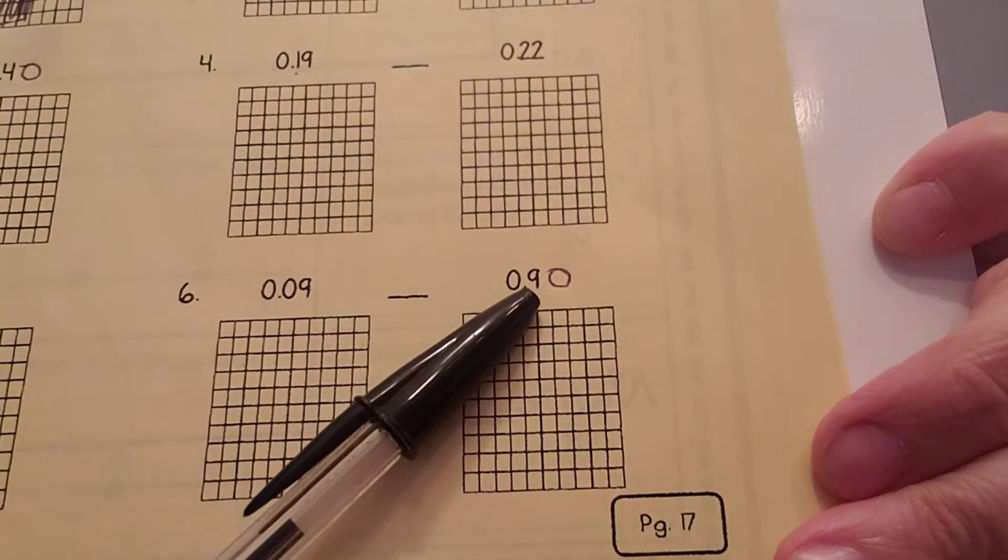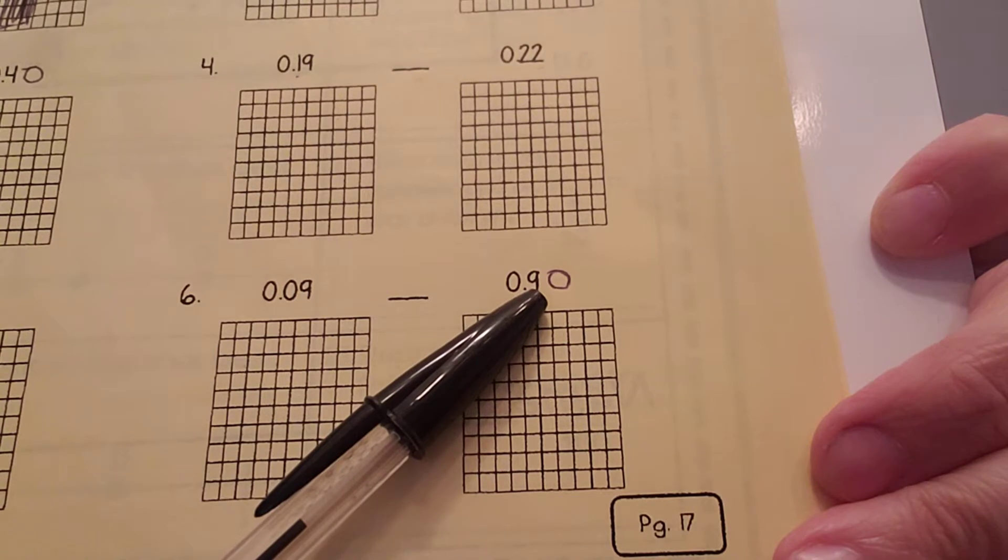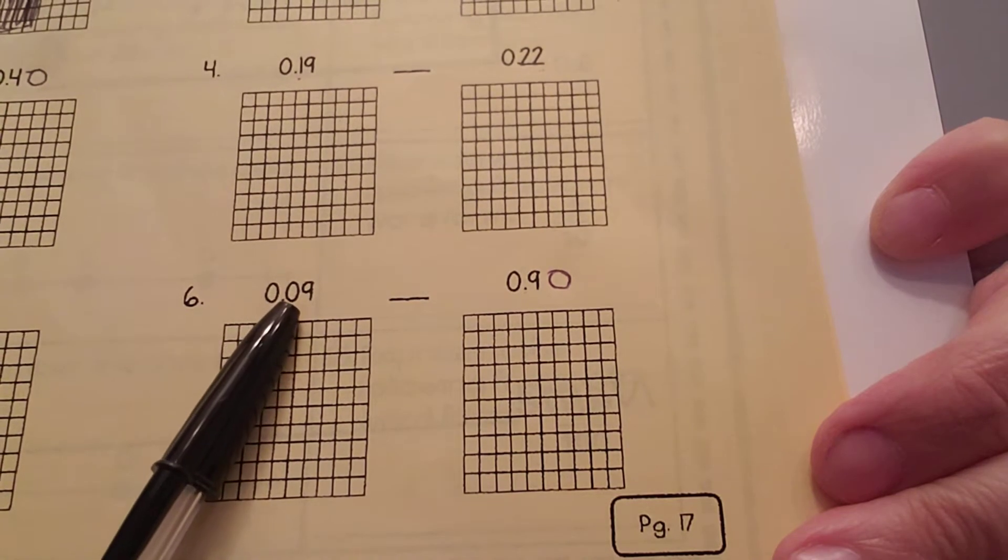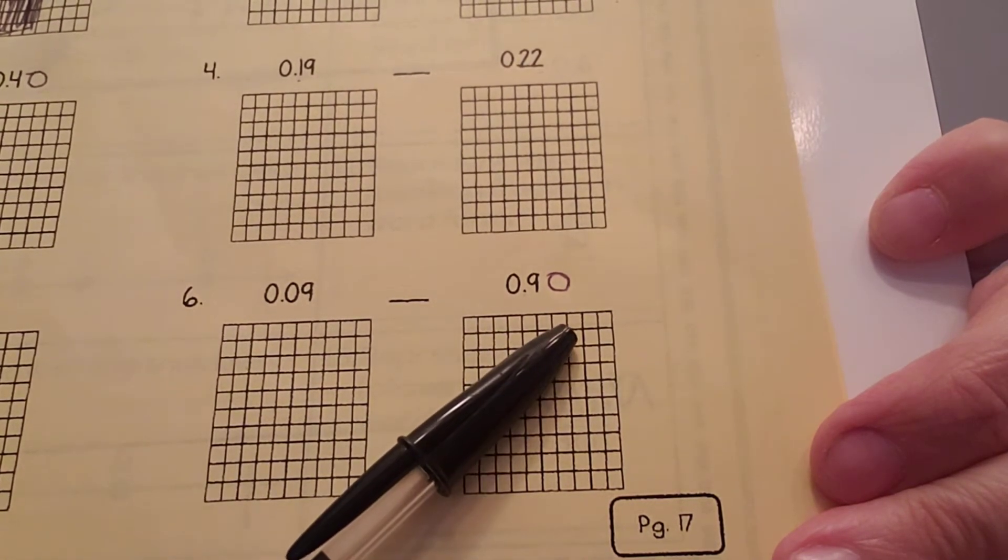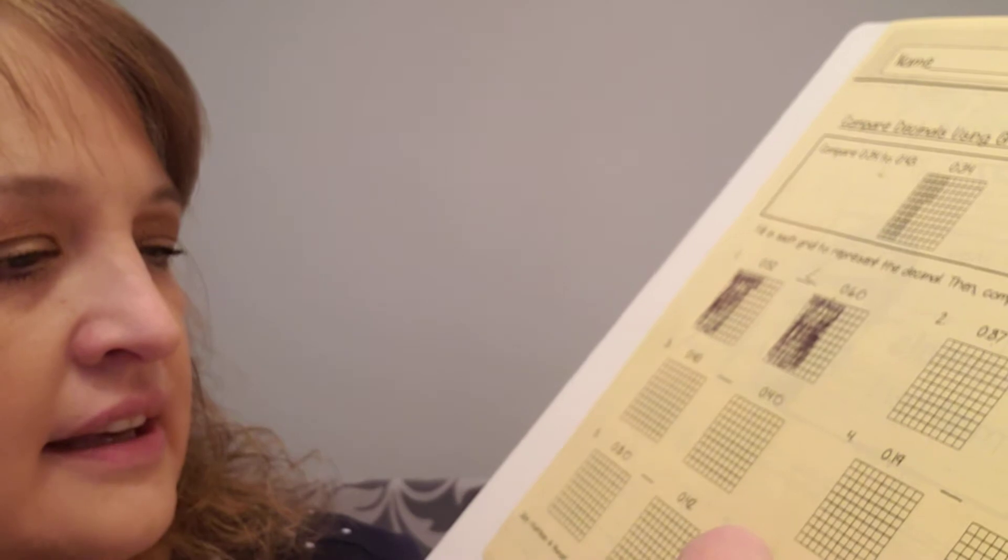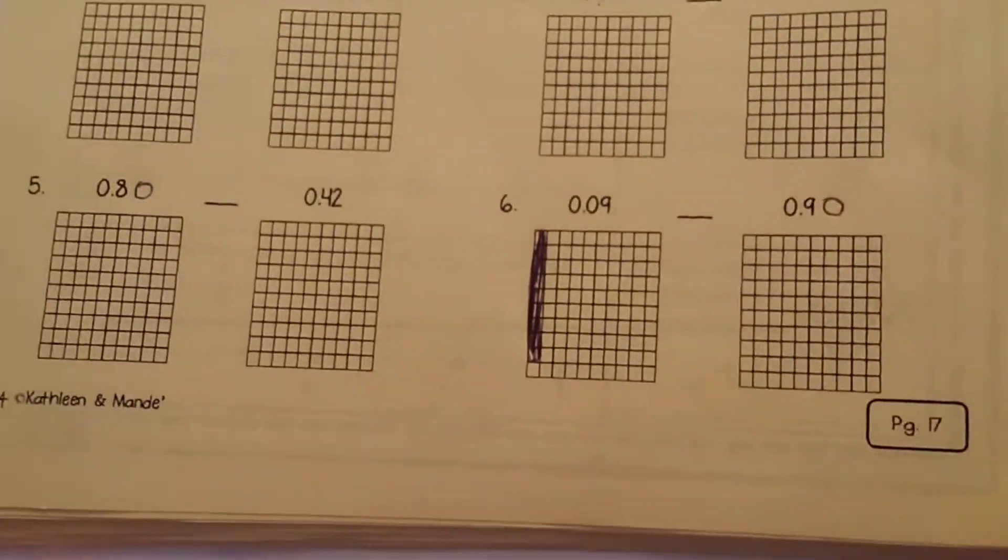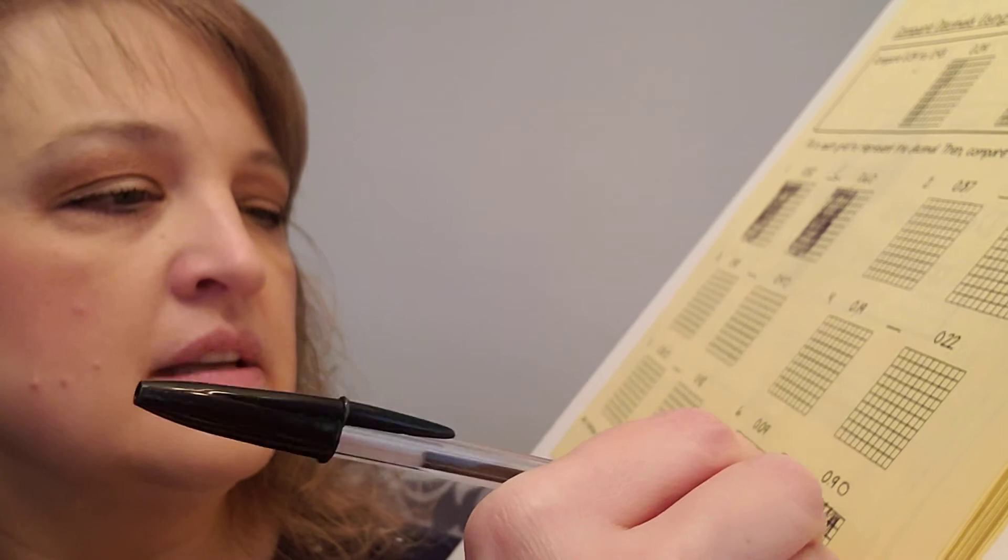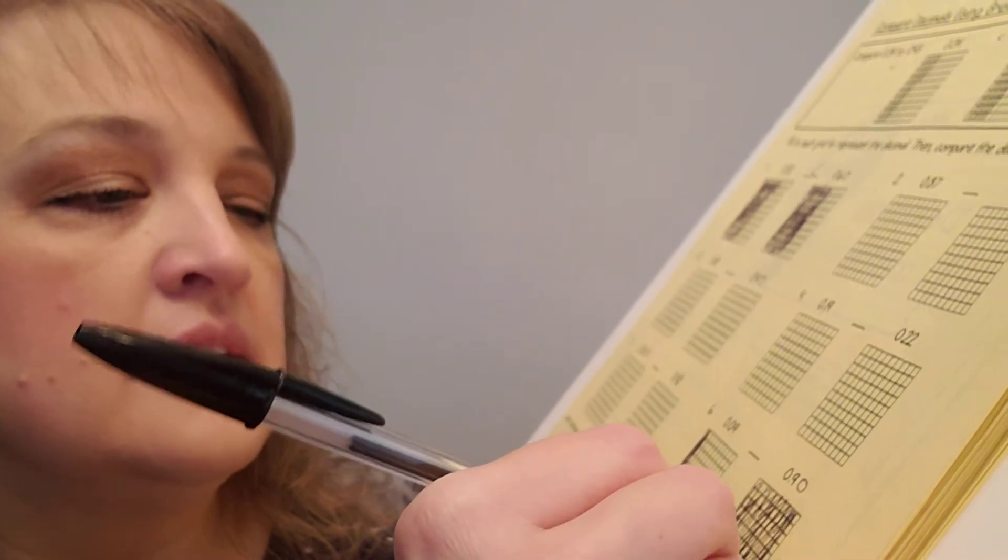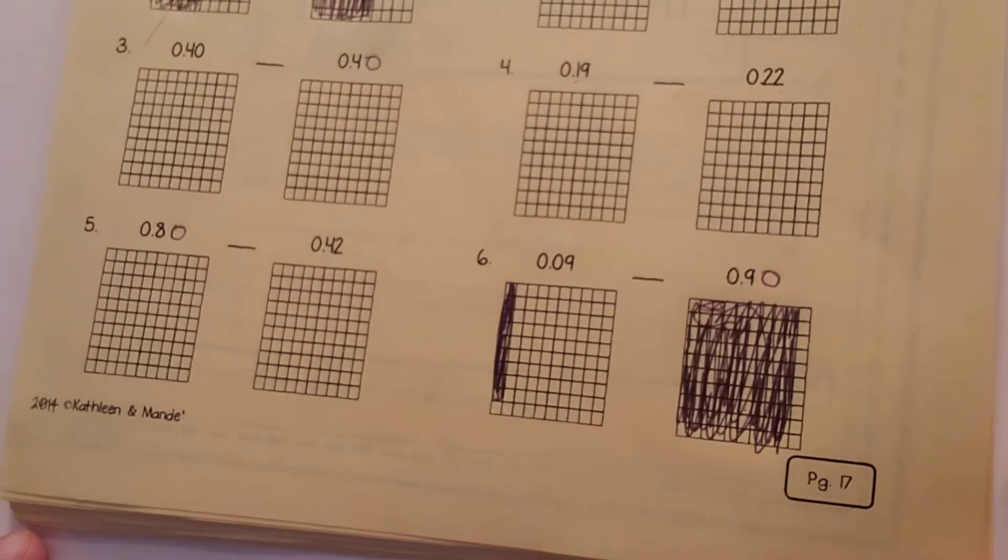This one, the nine is first. So, this is like nine dimes. That's ninety cents. Would you rather have nine pennies or nine dimes? Nine pennies is only going to look like this. That's nine pennies. But what are nine dimes going to look like? Nine dimes is going to look like that. That's very different.